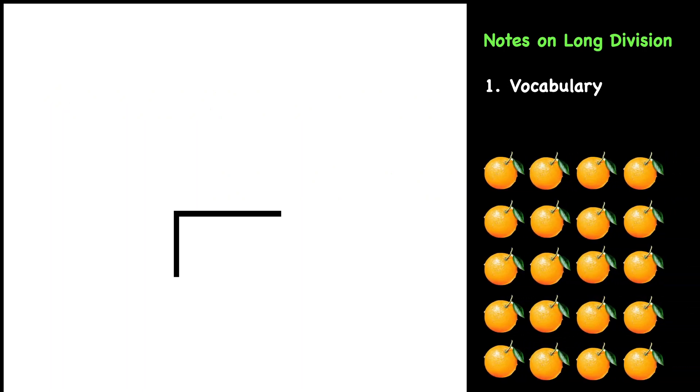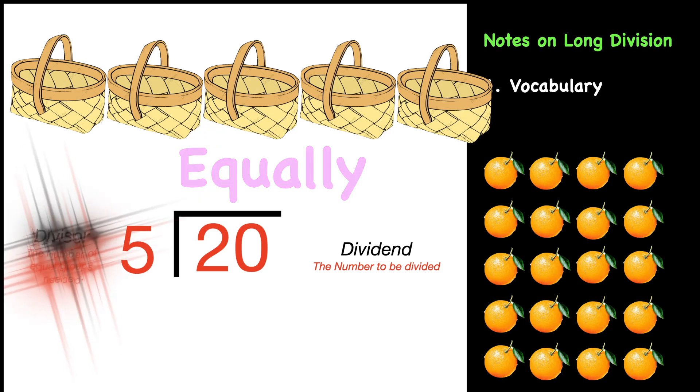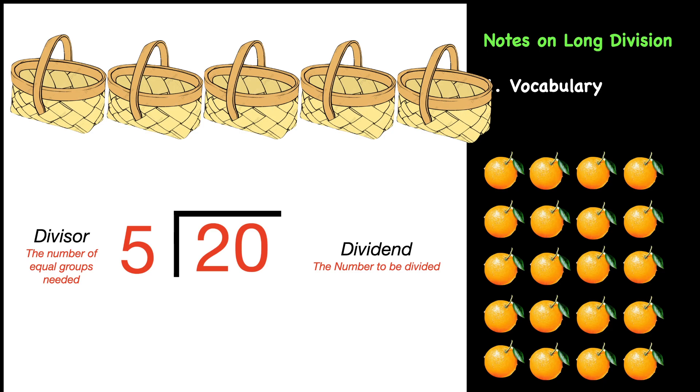Let's start with some oranges and look at vocabulary. We'll start with a group of 20 oranges. The 20 goes in the brackets and that is called the dividend - the number to be divided. Now we need to decide how we want to divide that. Let's say we have five baskets and we need to separate those oranges equally. The five goes on the left side of the brackets and that is called the divisor - the number of equal groups that we need. So we would read this problem as 20 divided by 5.